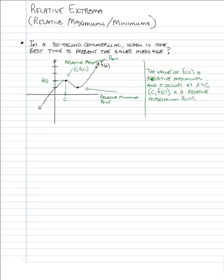Let me reiterate: the y value is actually the relative maximum. The y value is that maximum place on the graph. In a similar fashion, this position on the graph — that valley — is associated with some x value we'll call d. That point also has a y value, and we calculate it by putting d into the function, so that y value is f of d. The coordinates of this point are x equals d and y equals f of d.